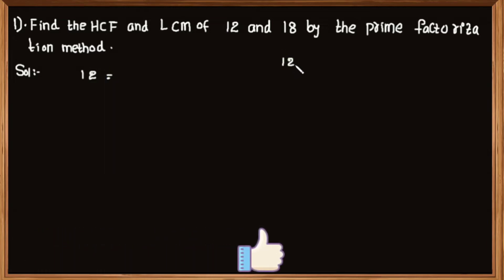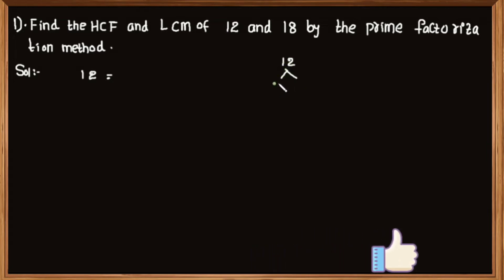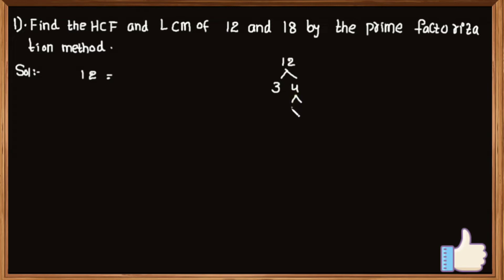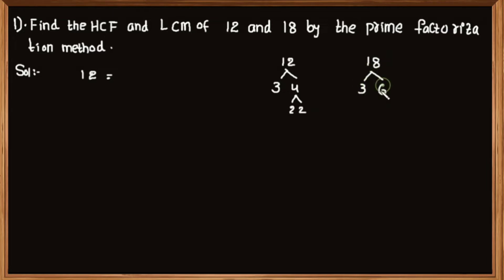12 can be written as product of 3 and 4. 3 is a prime number so it cannot be factorized further, and 4 can be written as the product of 2 and 2. 18 can be written as product of 3 and 6. 3 is a prime number and 6 can be written as the product of 2 and 3. Now write 12 as a product of prime numbers.